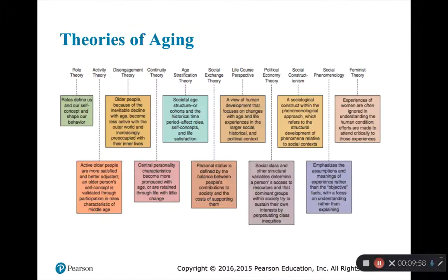These are all the theories that your textbook goes through — we just went through about the first half. If you want to read about political economy theory, social constructionism, social phenomenology, and feminist theory, those are the newer theories of social aging that are more specific to certain aspects of our society. I think they're really interesting, so definitely dig into the textbook to read more about those theories.